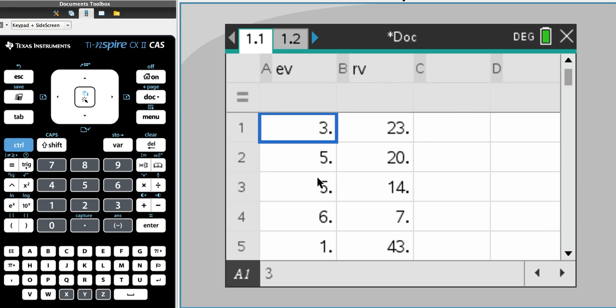In this video, we're going to see how to find Pearson's correlation coefficient, or R as it's known. In this list and spreadsheet page, I have entered in my data.